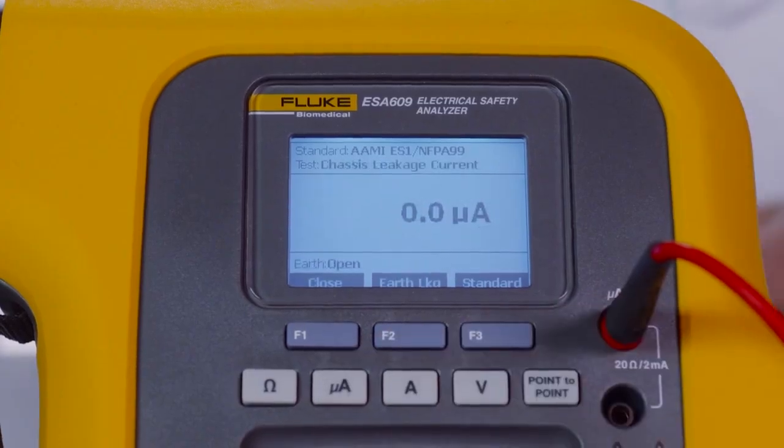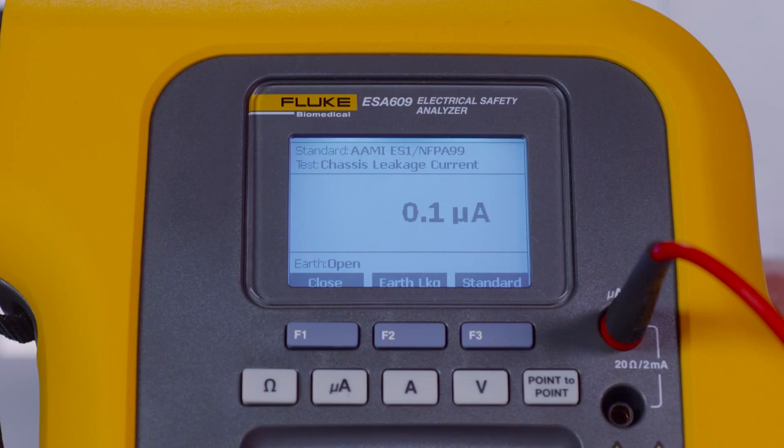Press microamps. The chassis leakage will display. A low leakage current value is required to confirm a safe device.